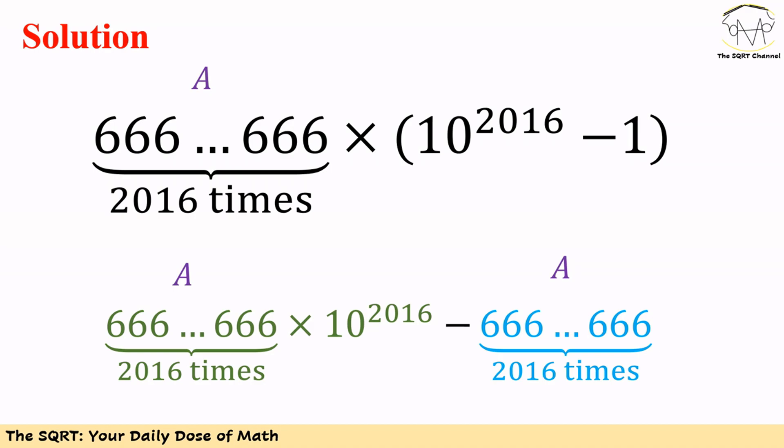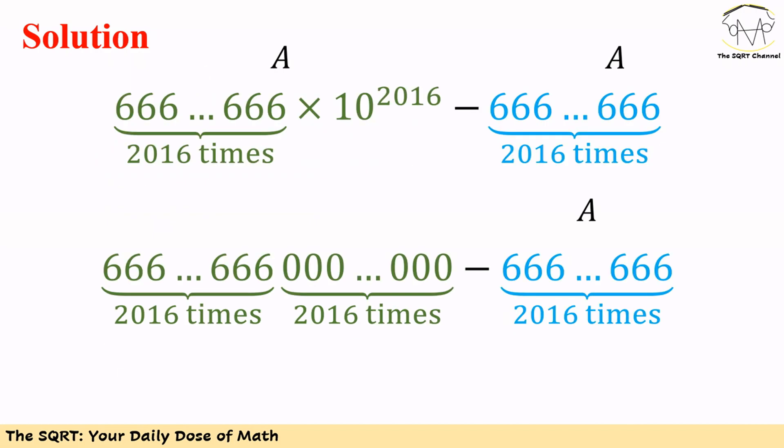So now we have A times B, and we can write it as A times (10^2016 minus 1), which can be written as A times 10^2016 minus A.